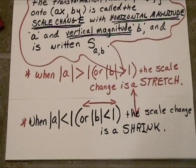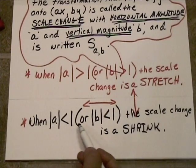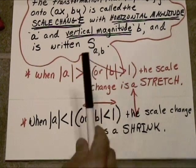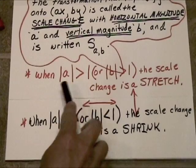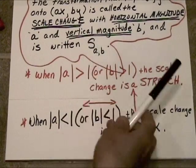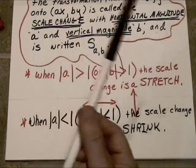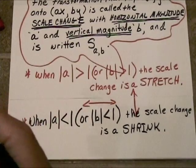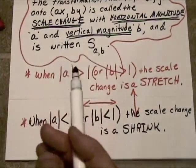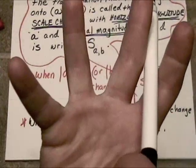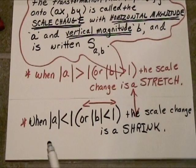If the absolute value of A is less than 1 or the absolute value of B is less than 1, in other words, if we have fractions, if we are multiplying by like 1 third or 2 thirds or 5 eighths or 1 ninth, the scale change is going to cause the figure to shrink.